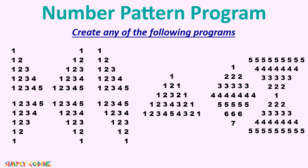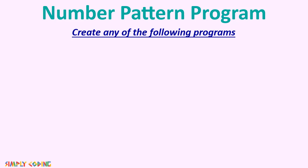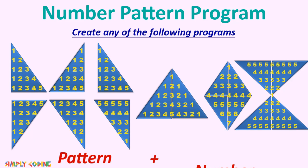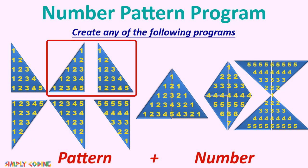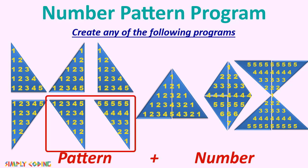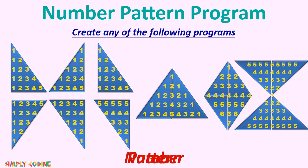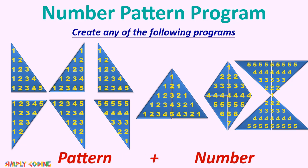When you do a number pattern program, you will notice there are actually two things which make the pattern. One is the pattern or shape, and second is the numbers which are inside the pattern. The numbers can be the same but in different patterns, or the pattern can be the same but each triangle has different numbers. If you are new to number pattern programming, remember that you should not mix the code for these two — your program will have two separate logic: one to make the pattern and other to put in the numbers as per the question.